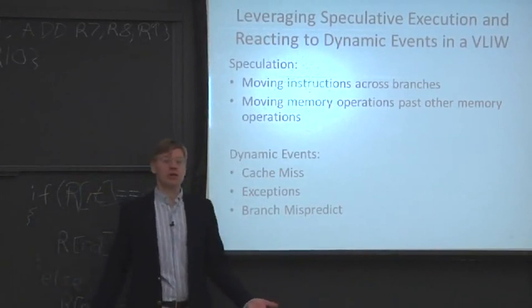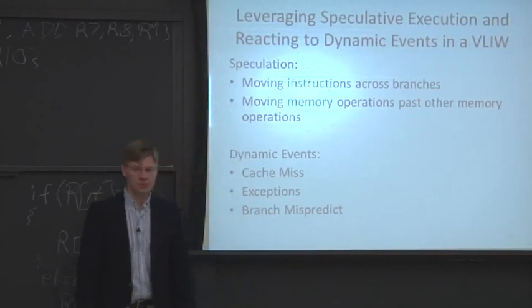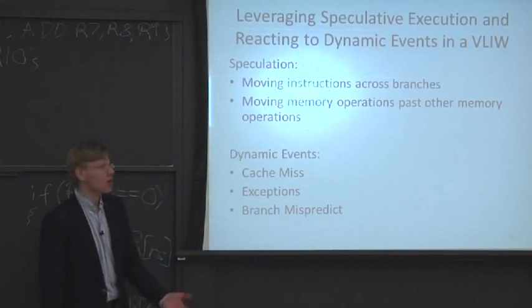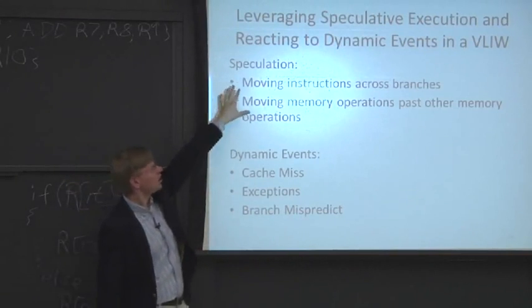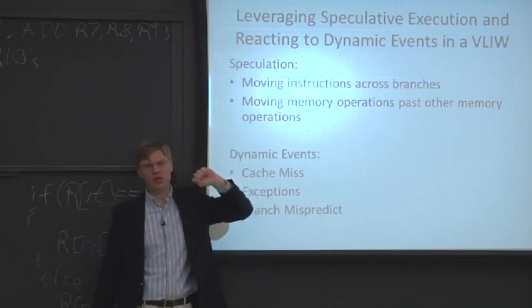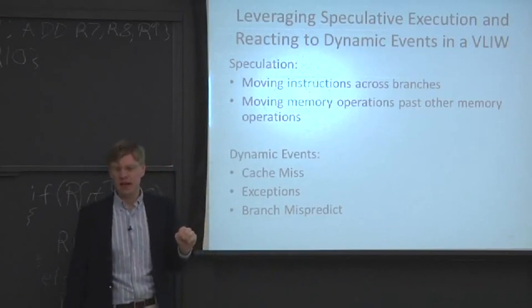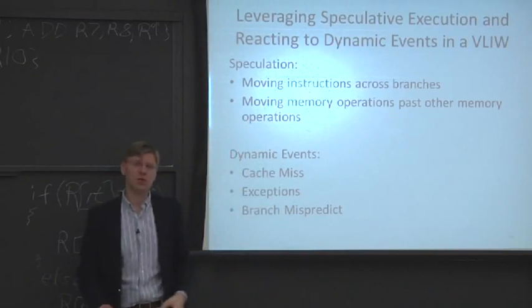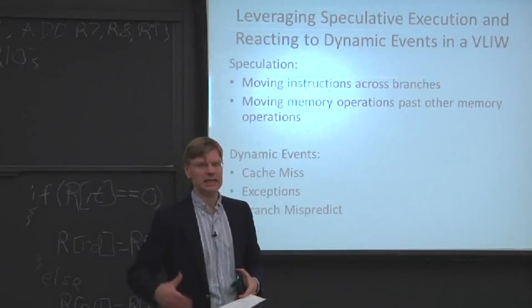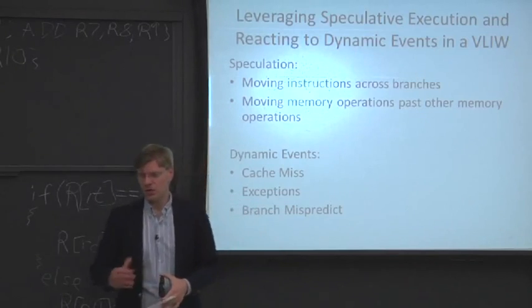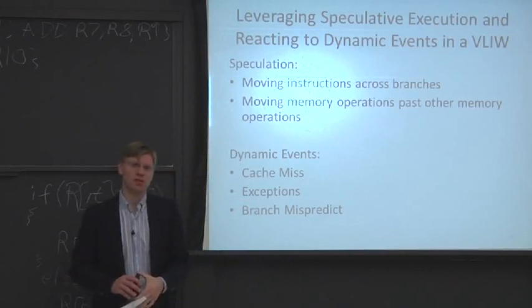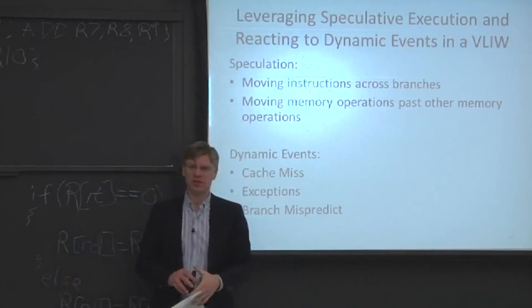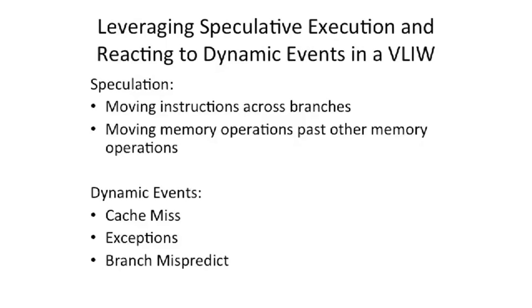How can the compiler know where exceptions are going to happen? It's just not really possible. Then we'll talk about speculation, which an out-of-order superscalar does. A lot of the things in this case we can add to classical VLIWs to get closer to those instruction-level parallelism improvements that you can get from speculation. We're going to talk about two different types of speculation today.